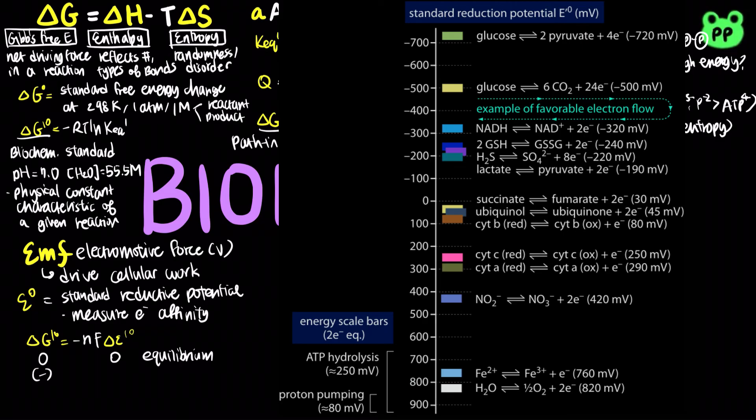When the change in reductive potential is positive, which means that the product has higher affinity for electrons, the change in free energy is negative, and the reaction is spontaneous or exergonic.